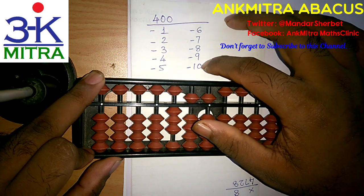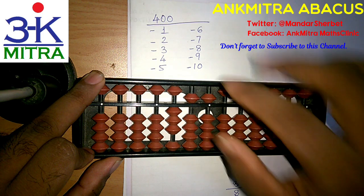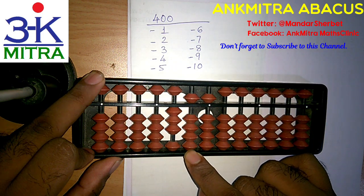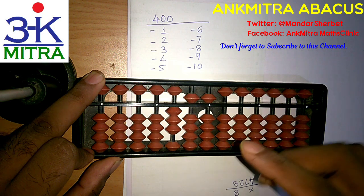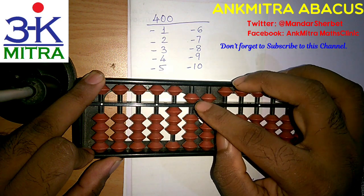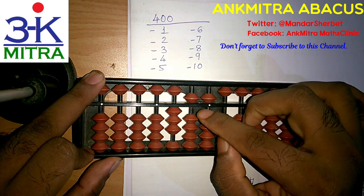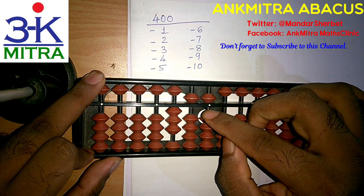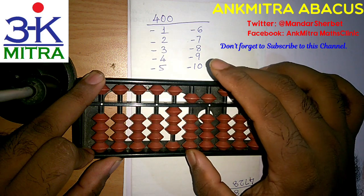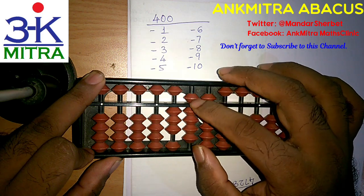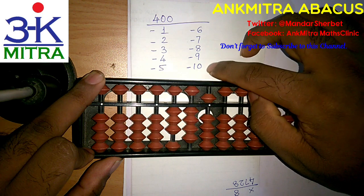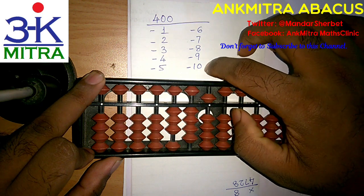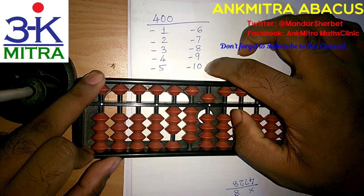Now coming to the last number, which is minus 10. We need to subtract 1 on the 10s place rod. We don't have a single bead available but we do have 5 available to subtract, so we can use the small friend formula of minus 1 which is plus 4 minus 5 on this 10s place rod and finish the subtraction of the last number, which is 10.